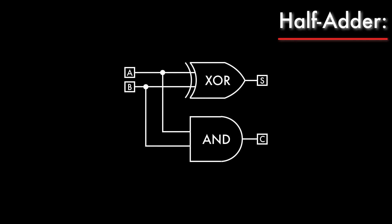Here's the half adder in the form of a logic gate diagram. The A and B inputs are wired to each logic gate in parallel, with A going to the top inputs and B going to the bottom. The results come out the other side — the XOR output is the sum, and the AND output is the carry out.